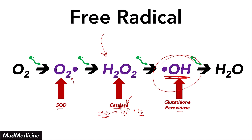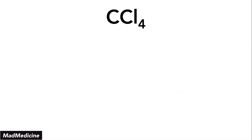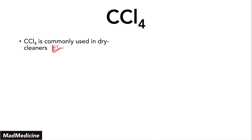Now let's finalize this topic by discussing chemicals. One chemical you need to know for the boards is carbon tetrachloride, which is commonly used in the dry cleaning industry. This is a very high-yield fact in case you get a vignette where a patient who is a dry cleaner comes in complaining of different problems, especially jaundice and ascites. What happens is that when carbon tetrachloride enters the blood, it becomes a carbon trichloride radical. This occurs due to the CYP450 enzyme in the liver.